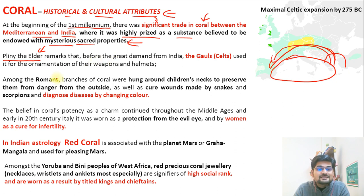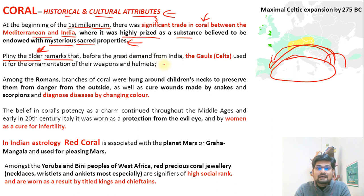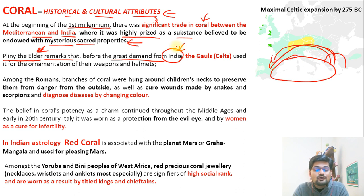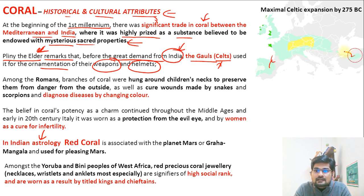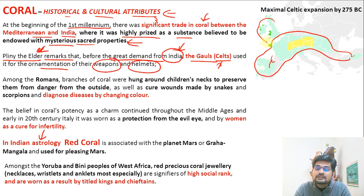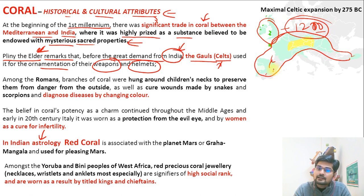The Roman scholar Pliny the Elder — who died in Pompeii during the eruption of Mount Vesuvius — remarked on the great demand for corals from India. Corals, or 'moonga,' have always been important in Indian astrology. The Celtic people, the Iron Age peoples who expanded around 1200 BCE, used coral for ornamentation of their weapons and helmets.